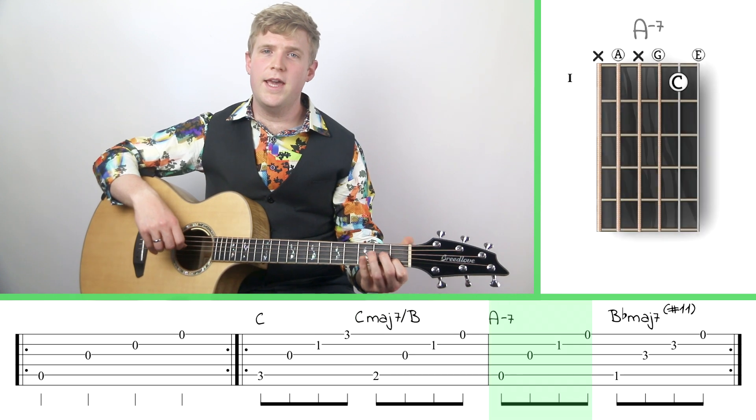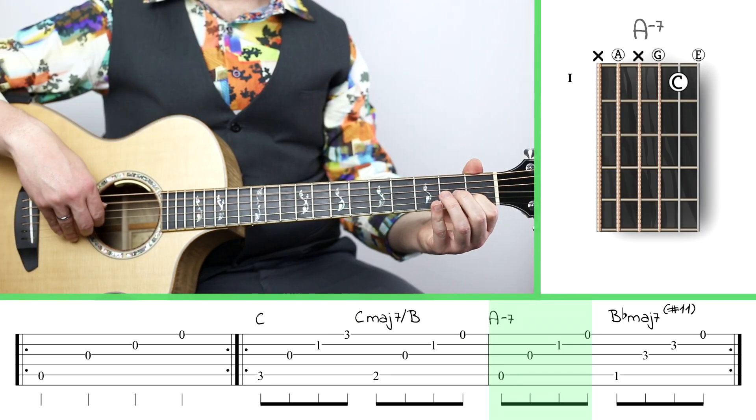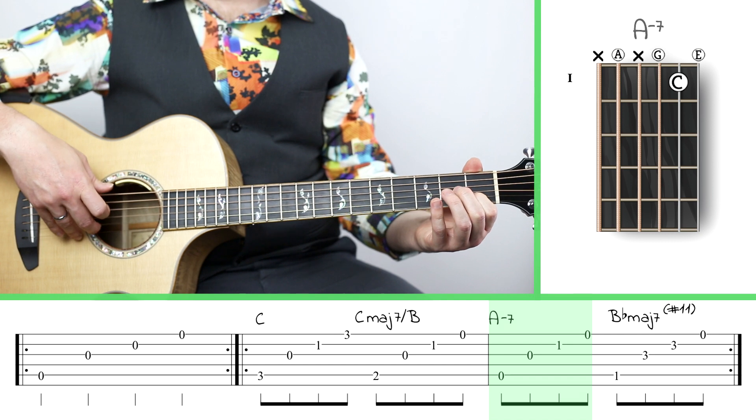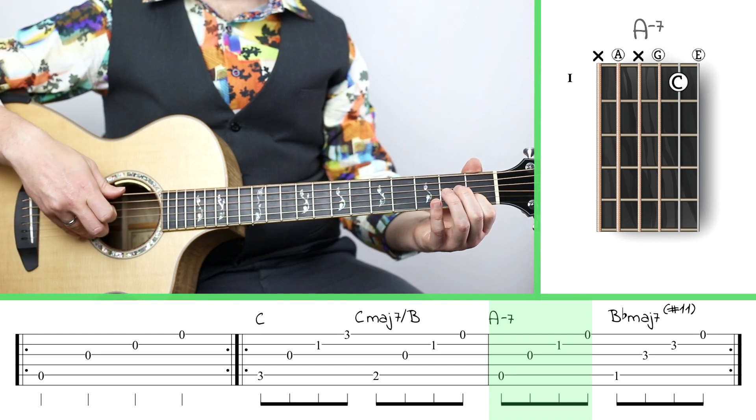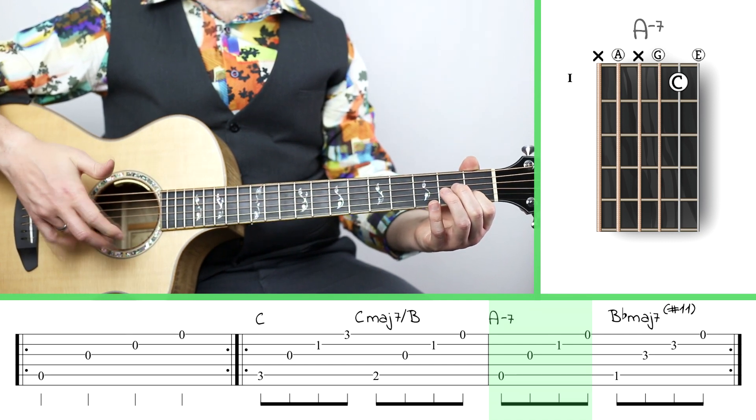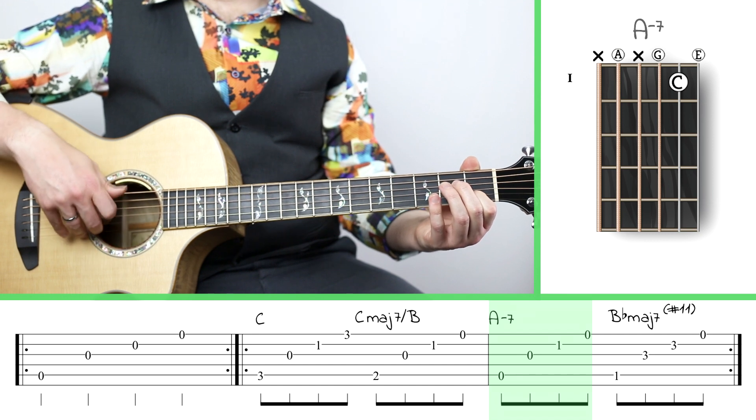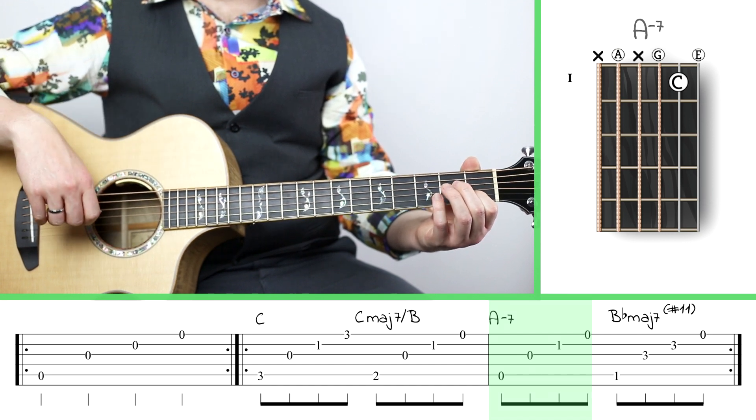Going down to A minor 7 in the next measure, we've got an open fifth string, which is nice, open third string, also nice, still index finger on the first fret of the second string, and an open high E string. And we just do that roll right down there.